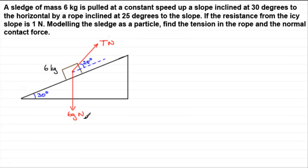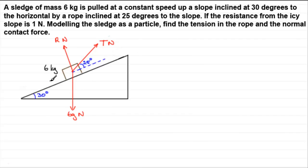Any other forces acting on this particle? We have the normal contact force, which we need to find — it acts at right angles to the surface, and I'll call that R Newtons. Don't forget the units are Newtons. Because the sledge is moving up the plane, there's a resistance from the icy slope of one Newton acting against the motion — down the plane. We're modelling the sledge as a particle, so all forces come from one single point.